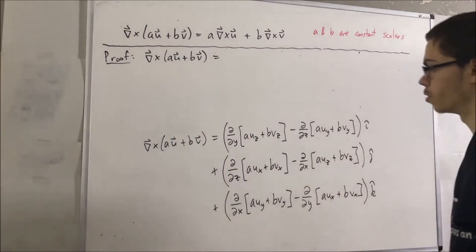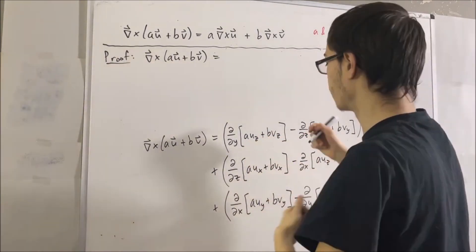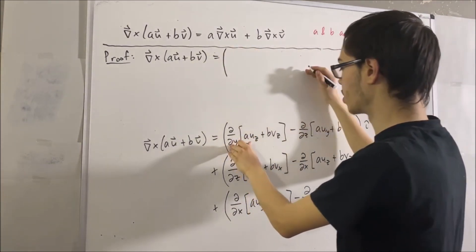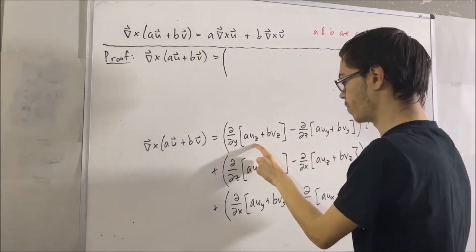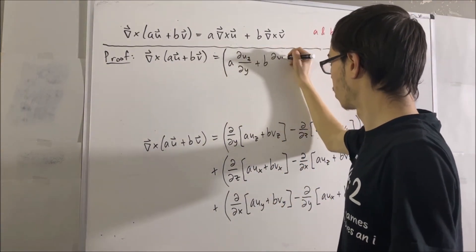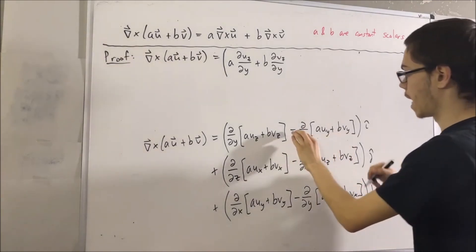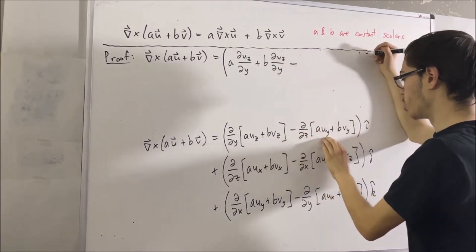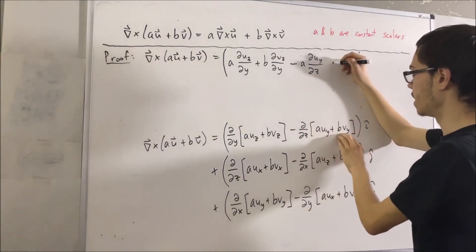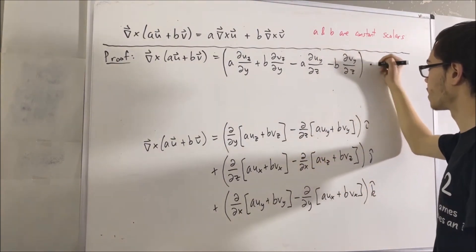So, now what we are going to do is we are going to take the derivative of each of these things. Starting with the i component, if we were to take the derivative of this thing with respect to y, that is going to be a partial uz with respect to y plus b partial vz with respect to y. When we do the partial of this with respect to z, we're going to have a minus sign, a partial uy with respect to z. But the minus sign distributes, so we're going to get a minus b partial vy with respect to z. And so, this would be our i component.